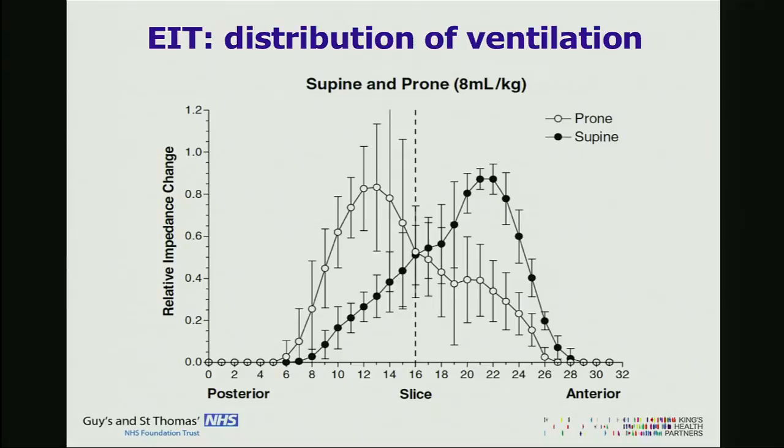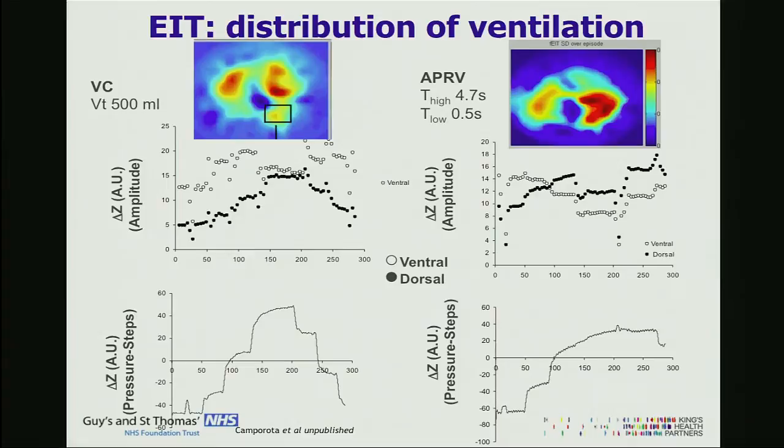Regarding positioning: prone position was discussed earlier, and it's quite clear that we can see a change in distribution of ventilation — which is what we expect from prone, going towards posterior ventilation, and supine going towards ventral. But it doesn't always happen. Some patients in prone position don't show that transition, and knowing which patients do and which don't might be clinically relevant.